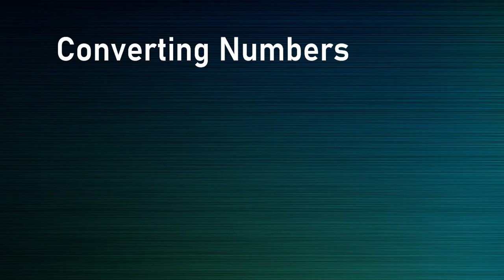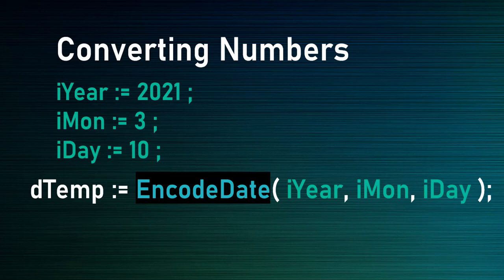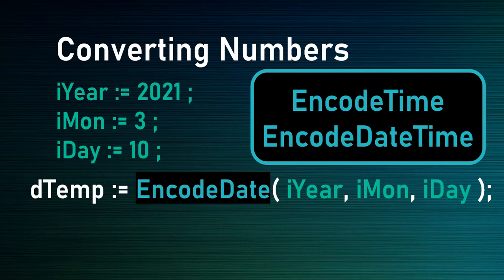Sometimes you might have the year, month, and day stored as separate integers — for example from three spin-edit controls. There is an EncodeDate function that takes the year, month, and day as parameters and converts them into a date. There are also EncodeTime and EncodeDateTime functions that work similarly but take different parameters: EncodeTime takes hours, minutes, and seconds, and EncodeDateTime takes year, month, day, hour, minutes, and seconds.